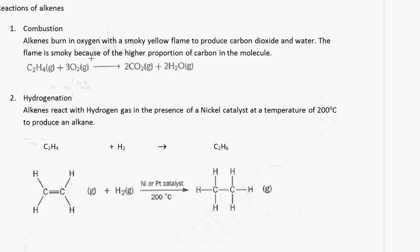Now we look at the reactions of alkenes. In the case of combustion, when an alkene is burnt in oxygen, it burns with a smoky yellow flame to produce carbon dioxide and water. The flame is smoky because of the higher proportion of carbon in the molecule. For example, if we burn ethene in oxygen, we get carbon dioxide and water, similar to the reaction of an alkane.